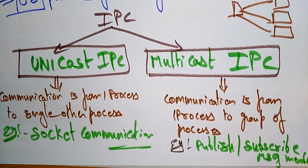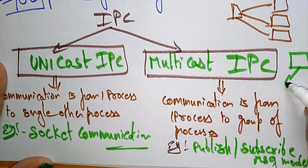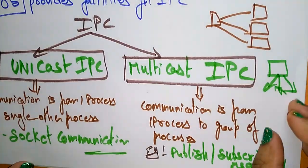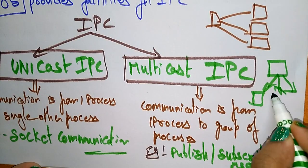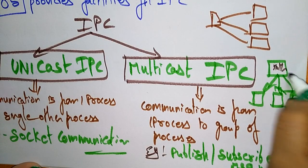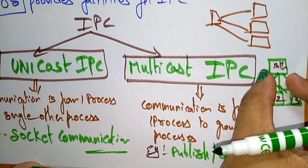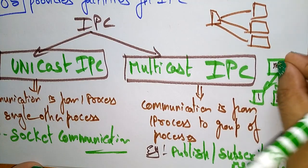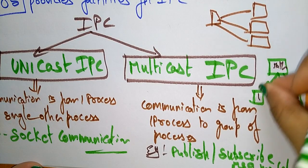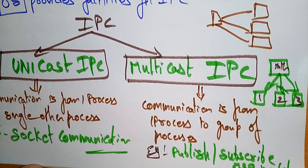Publish-subscribe means, for example, one channel is publishing their content for subscribers. Different people subscribe to that channel — one, two, three different processes. So communication goes from one process to a group of processes. That is multicast inter-process communication — one process communicating with a group of processes.